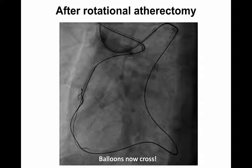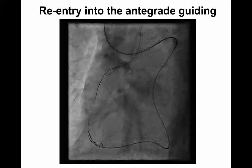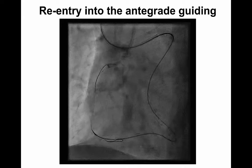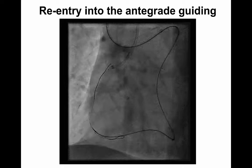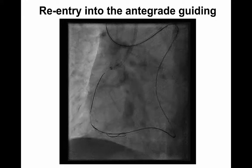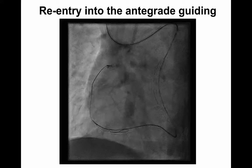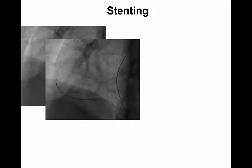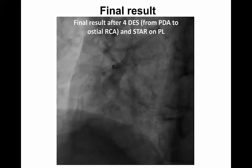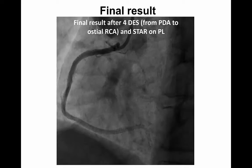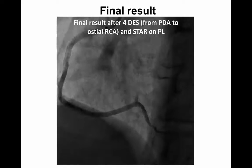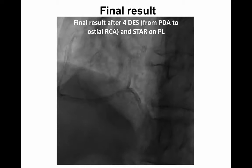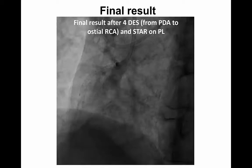The balloons now cross after having performed rotational atherectomy. We then re-entered into the antegrade guiding catheter from the retrograde side and performed conventional PCI with implantation of four drug-eluting stents from the PDA to ostial RCA. We also performed STAR on the posterolateral branch, and this is the final result.